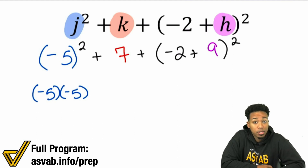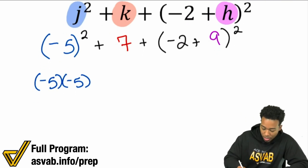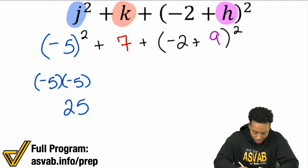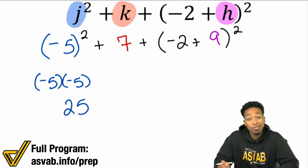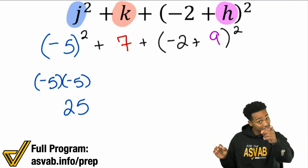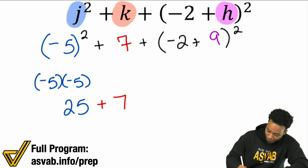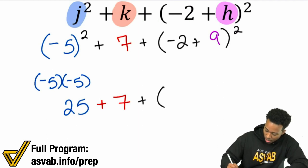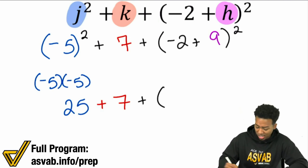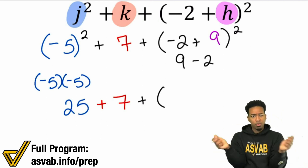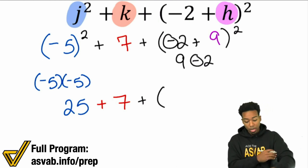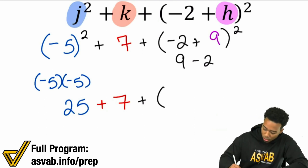Negative 5 squared — what's a negative times a negative? That's going to be positive 25. Remember, if you didn't put the parentheses, you'd have negative 5 squared as negative 25, which would get your answer wrong automatically. So pay attention there. Next, we add 7. Then we figure out what the parentheses gives us: negative 2 plus 9 is the same as 9 minus 2 — you can switch it around when it comes to addition and subtraction, just make sure to bring the sign with you. So 9 minus 2 is 7.